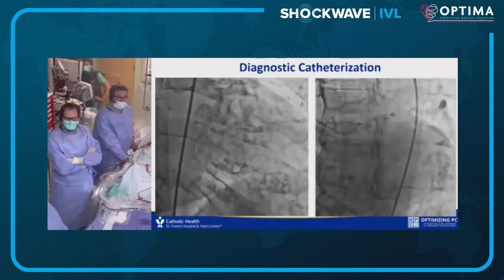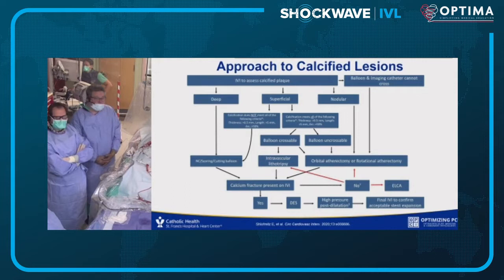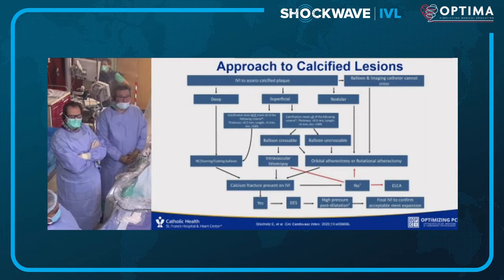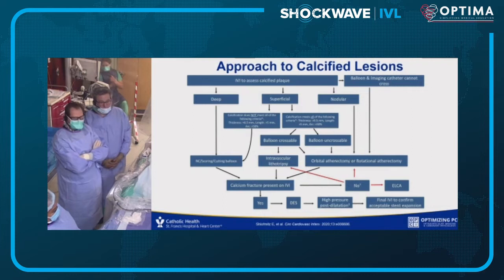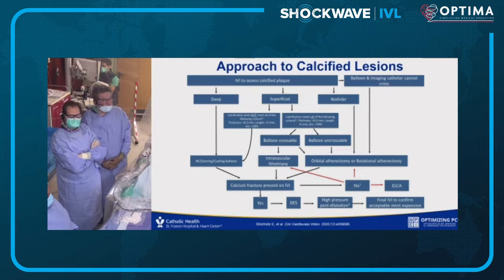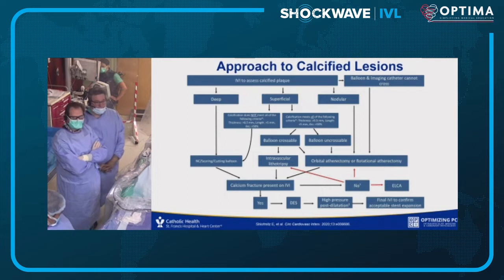Richard outlines the St Francis algorithm for calcified lesions: over the last 10 years with 20 interventional cardiologists, they've adopted a systematic physiologic and imaging algorithmic approach to all angioplasty. They don't consider any lesion as type A until imaged — imaging is critical. Currently 95% of cases have imaging and/or physiology. Angiography alone is inadequate to assess calcium — it can be deep, superficial, or nodular — and many technologies now exist to modify calcium before stenting rather than struggling with instant restenosis.